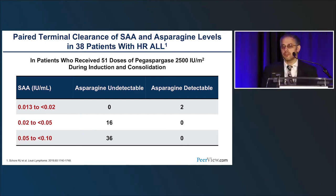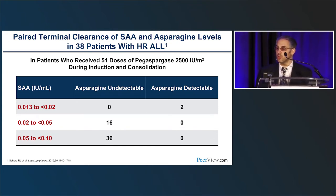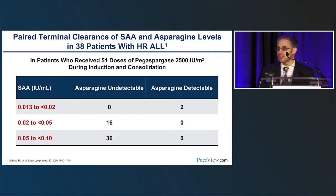In a trial looking at patients who received pegasparaginase with simultaneous asparaginase and asparagine levels, we minimized ex vivo depletion and also checked CSF asparagine levels — where ex vivo depletion is not a concern since asparaginase itself doesn't cross the blood-brain barrier. We found that in patients with serum asparaginase activity as low as 0.02, all had asparagine depletion. Patients with levels below 0.02 still had detectable asparagine. This calls into question whether 0.1 is absolutely required to be therapeutic, though 0.1 is still generally considered the acceptable threshold.